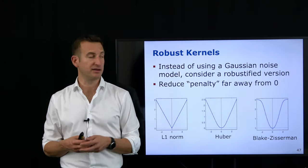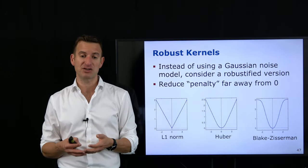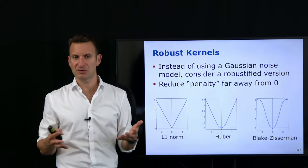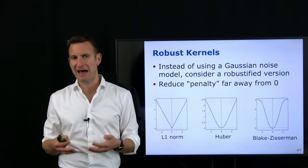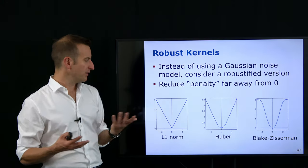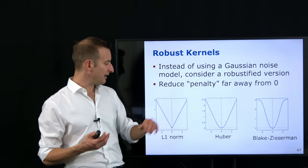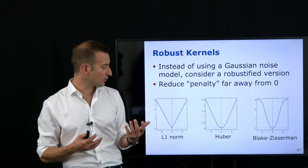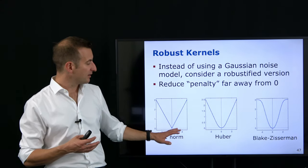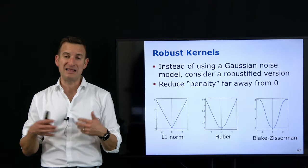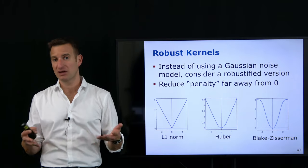One option is the L1 norm — taking the absolute value of my error rather than a quadratic function. This means outliers have only a linear effect on the error, not a quadratic one, giving much less weight to points far from the solution. A very popular choice is the Huber kernel, which is quadratic close to the minimum — so Gaussian near the solution — and turns linear beyond a threshold. It's a combination of the Gaussian and the L1 norm.